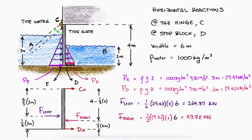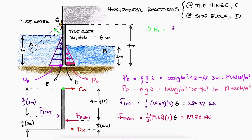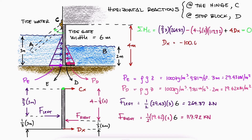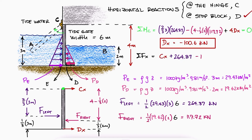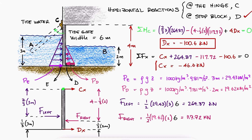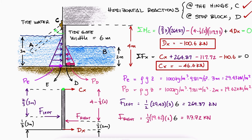With a simple sum of moments about C, and knowing that the gate is not rotating, we can find the value for the reaction at D. Then, with a sum of forces in x, and knowing that the gate is not translating left or right, we find the value for the reaction at C.